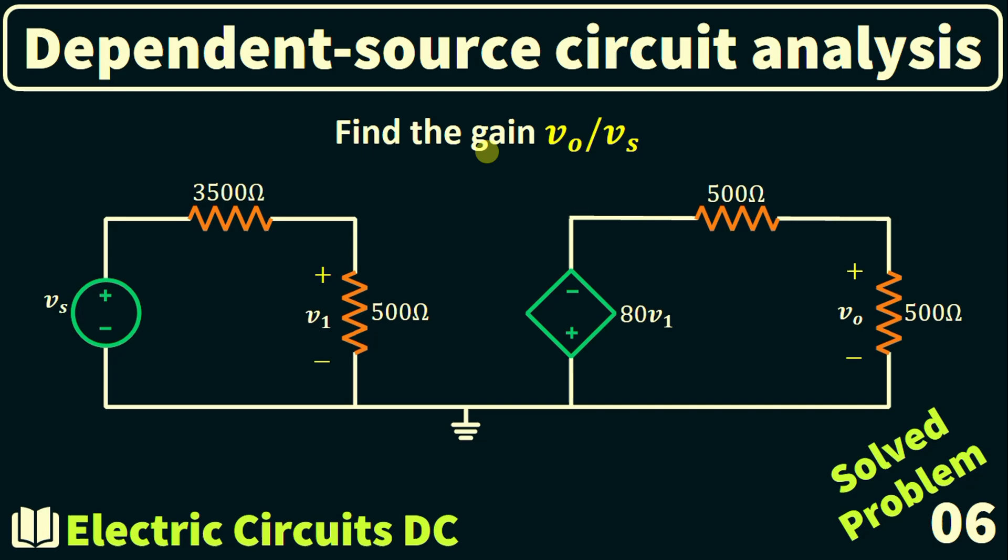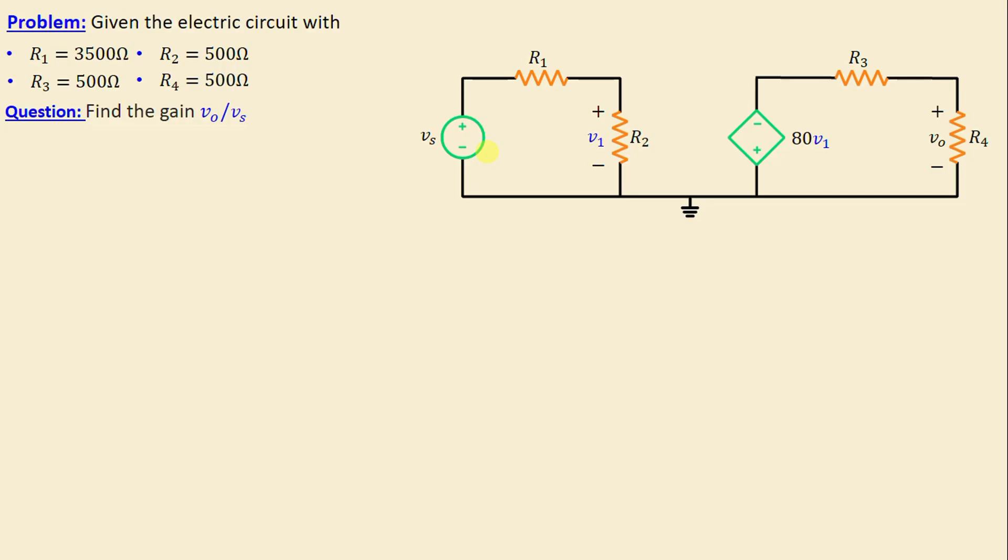Greetings and welcome to this new video about dependent source circuit analysis. Let's solve problem number six. Consider this network consisting of four resistors